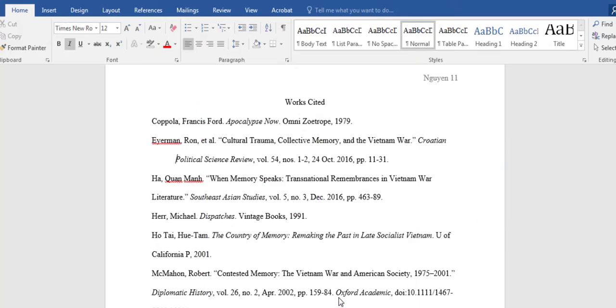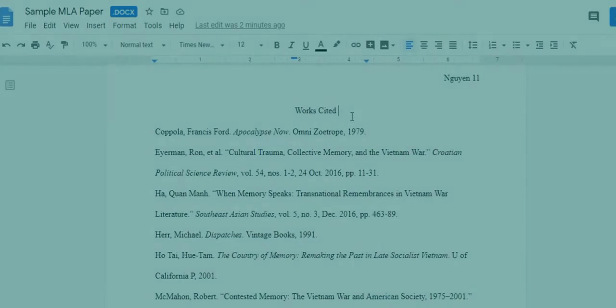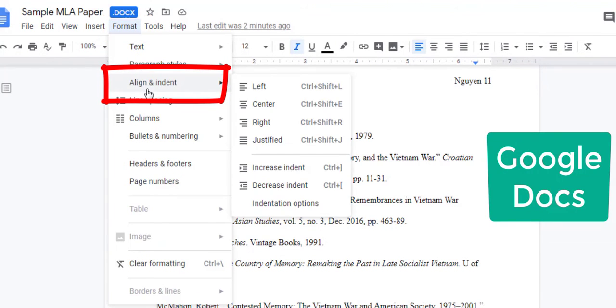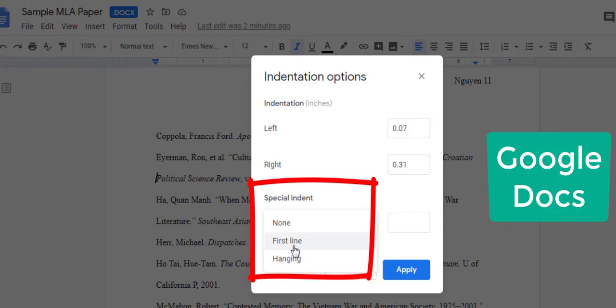In Google Docs, again select the lines that you want to indent, then go to format, align and indent, indentation options, and under special indent, select hanging.